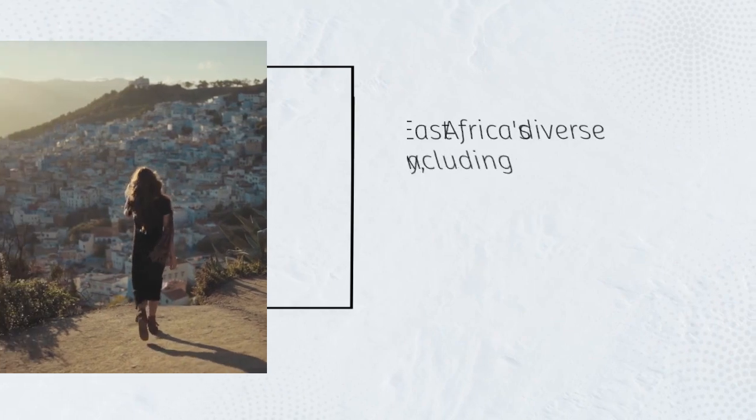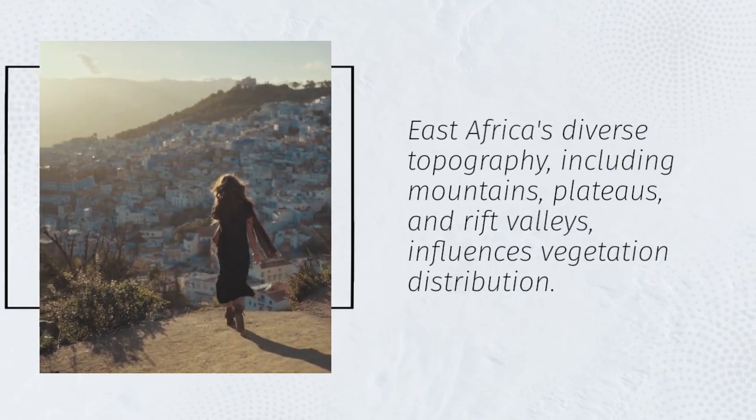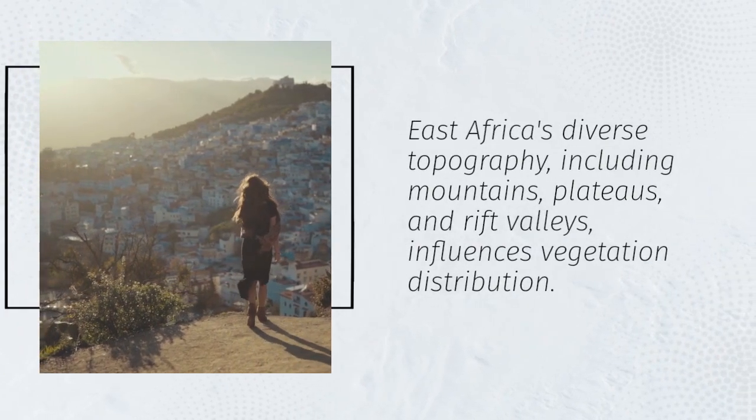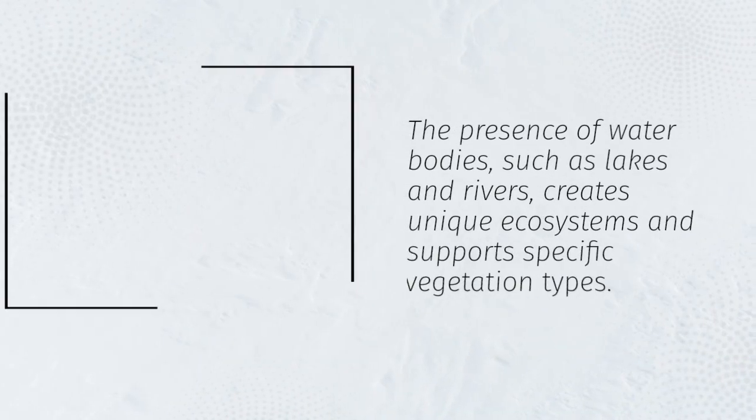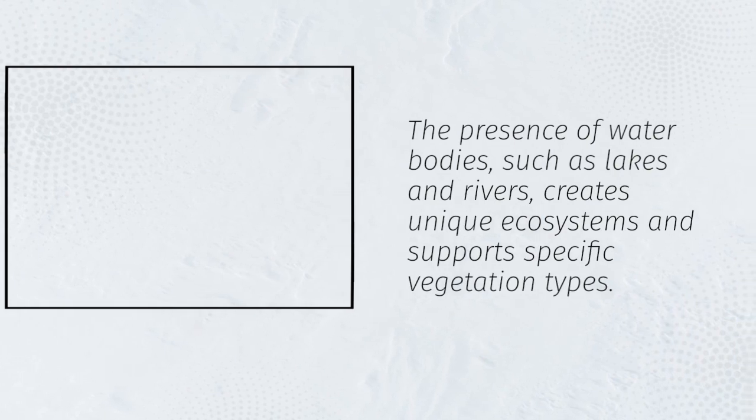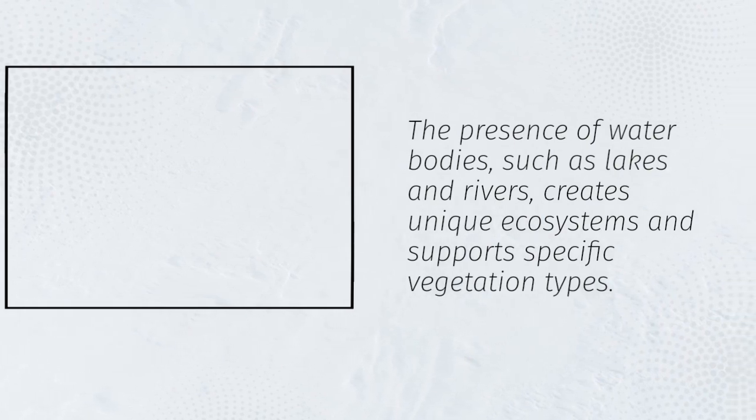East Africa's diverse topography, including mountains, plateaus, and rift valleys, influences vegetation distribution. The presence of waterbodies, such as lakes and rivers, creates unique ecosystems and supports specific vegetation types.